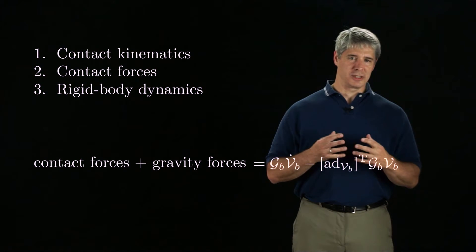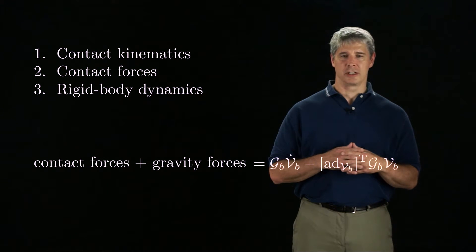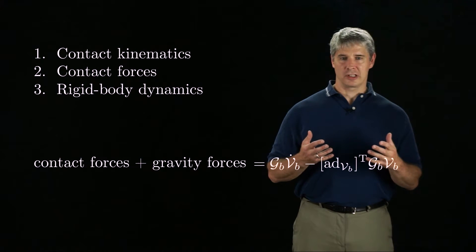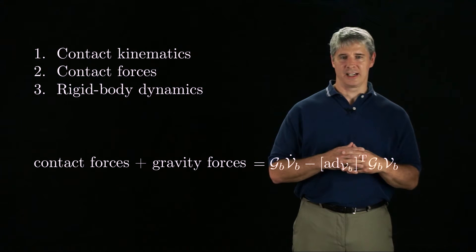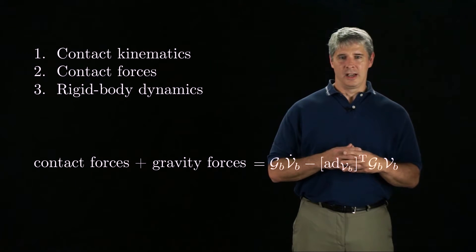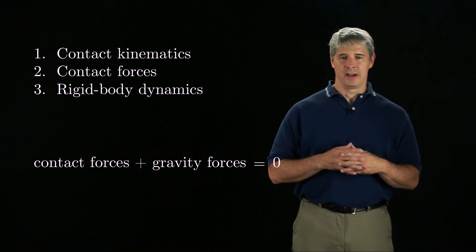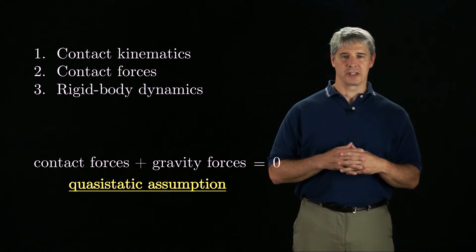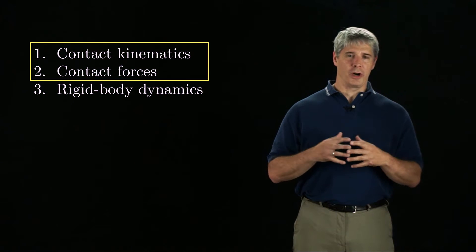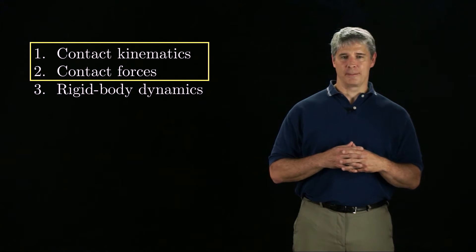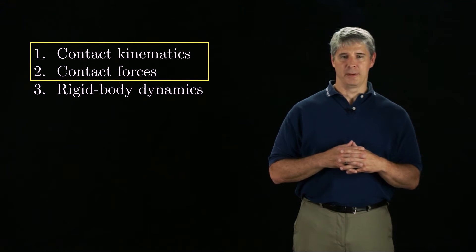Third, rigid body dynamics, as we studied in Chapter 8, tells us the relationship between forces and motions of rigid bodies. If motions are slow, then we can assume that velocity and acceleration terms are negligible, and therefore, contact forces and gravity forces must balance. This is called the quasi-static assumption. Chapter 12 focuses on the first two topics and applies the ideas to several different manipulation problems.